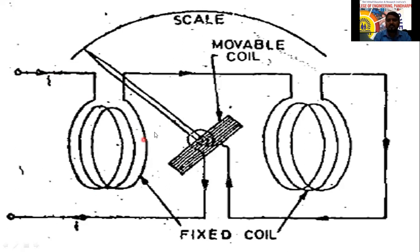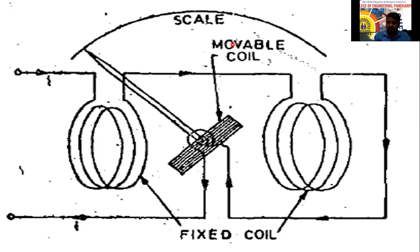The magnetic field is produced between the two fixed coils. The same current flows through the moving coil. Now flux is produced, and a force is produced. That force helps to deflect the pointer — because of the magnetic field and the resulting force, the pointer deflects from zero to a non-zero value.